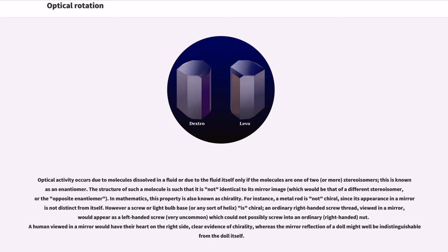Optical activity occurs due to molecules dissolved in a fluid or due to the fluid itself only if the molecules are one of two stereoisomers, this is known as an enantiomer. The structure of such a molecule is such that it is not identical to its mirror image. In mathematics, this property is also known as chirality. For instance, a metal rod is not chiral, since its appearance in a mirror is not distinct from itself. However a screw or lightbulb base is chiral. An ordinary right-handed screw thread, viewed in a mirror, would appear as a left-handed screw which could not possibly screw into an ordinary nut. A human viewed in a mirror would have their heart on the right side, clear evidence of chirality.